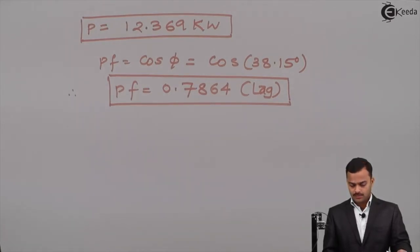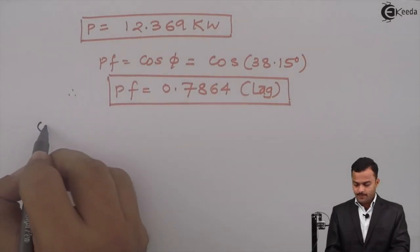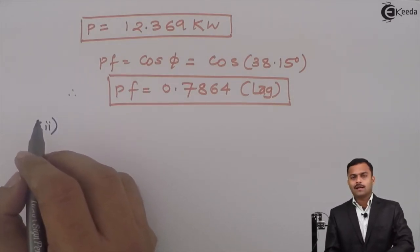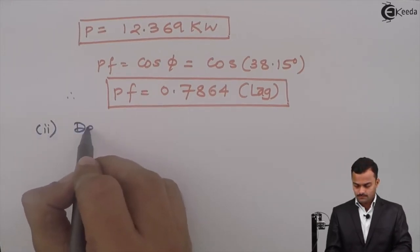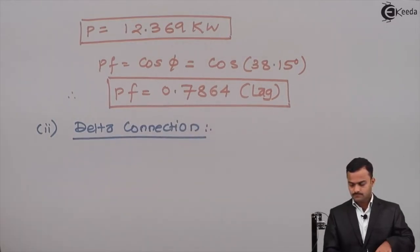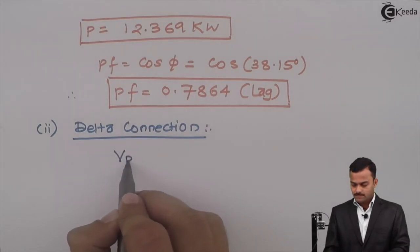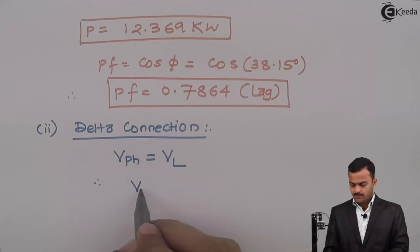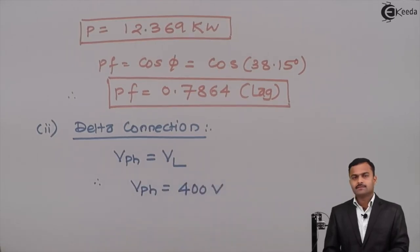So this is the first part of the problem. Let's go to the second part. In the second part, the load is now connected in delta. For a delta connected load, we know phase voltage equals line voltage. Line voltage is 400 volts, hence phase voltage will also be 400 volts.